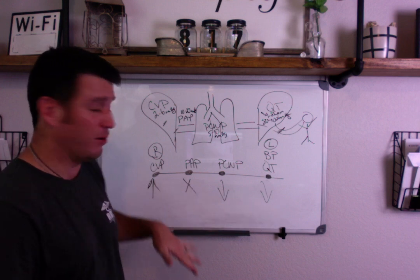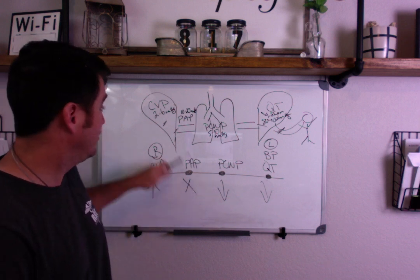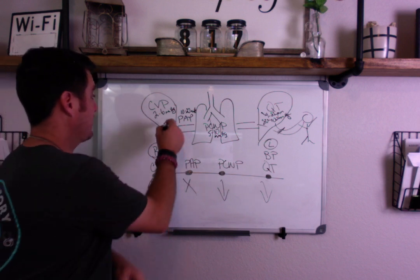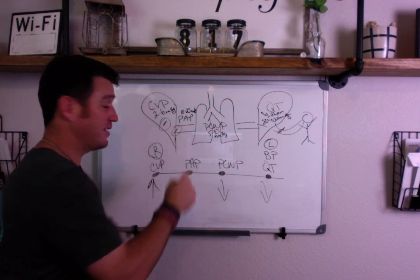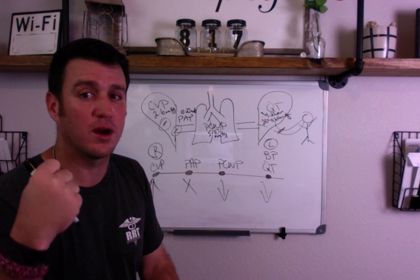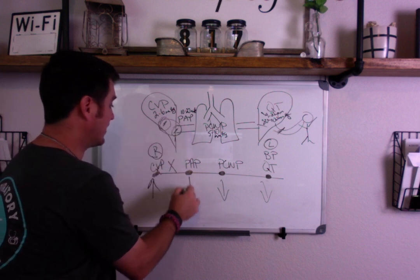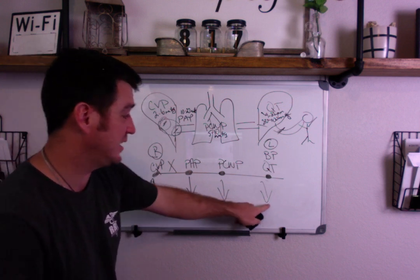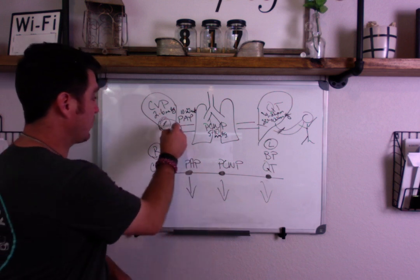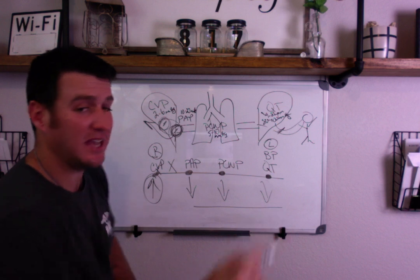While we're here, understand that with CVP being up you also need to remember the tricuspid valve and the pulmonic valve on the right side. If you have tricuspid valve stenosis or pulmonic valve stenosis, the problem is happening at those spots. You'll have decreased pulmonary artery pressure, decreased pulmonary capillary wedge pressures, and decreased cardiac output — because the problem is backing fluid up and increasing CVP but decreasing everything else downstream.